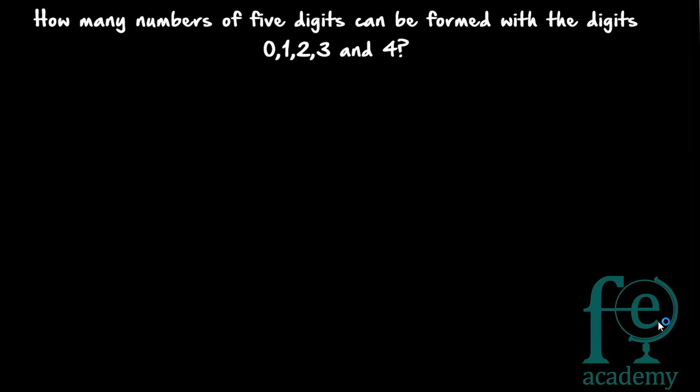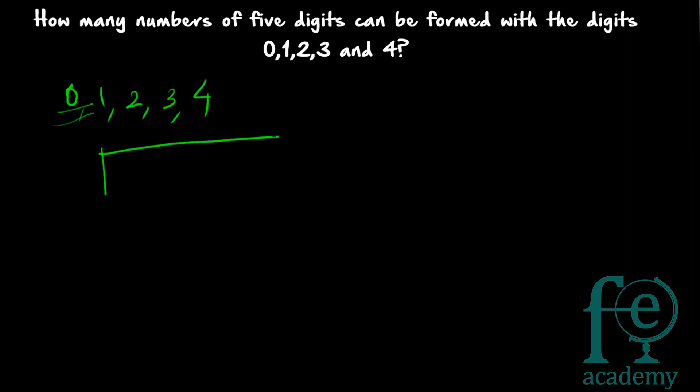Here I am going to discuss both without repetition and with repetition, how to find the total number of 5-digit numbers possible. You are given 5 digits: 0, 1, 2, 3 and 4. In the normal case, if 5 digits are given and you are asked to form 5-digit numbers, your answer will be 5 factorial. But here the problem is 0 is coming.